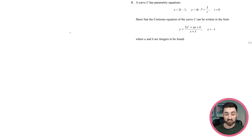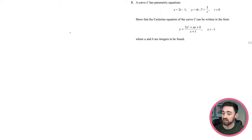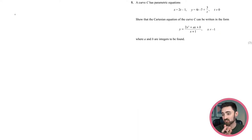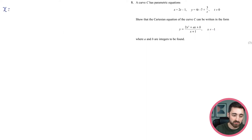Question 5. Given parametric equations x equals 2t minus 1 and y equals 4t minus 7 plus 3 over t, show the Cartesian equation can be written in a given form. To eliminate t, rearrange the simpler x equation: x plus 1 equals 2t, so t equals (x plus 1) over 2. This is substituted into the y equation.